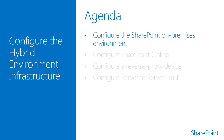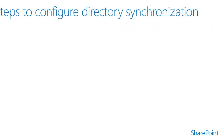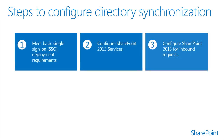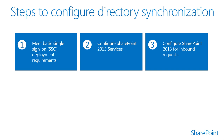This section provides an overview of configuring the on-premises SharePoint environment. The basic steps to configuring the on-premises environment in preparation of the hybrid infrastructure include meeting the basic single sign-on deployment requirements, configuring SharePoint 2013 services, and lastly, configuring SharePoint 2013 for inbound requests.